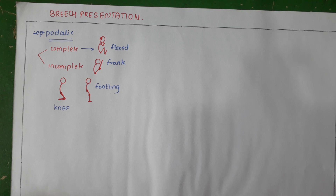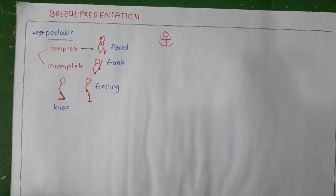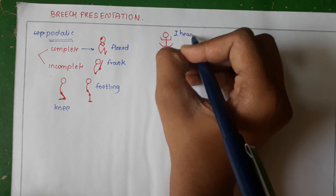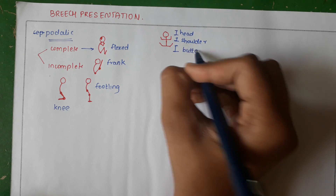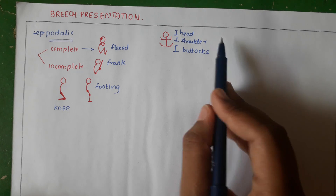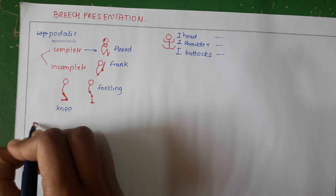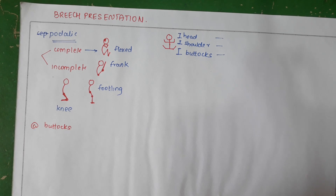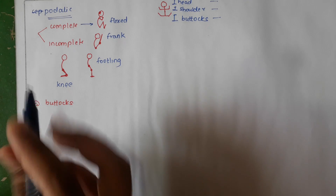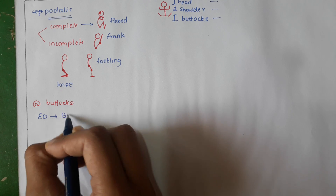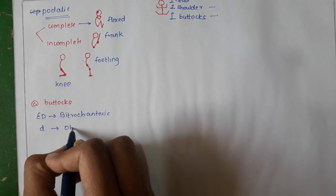For explanation of the mechanism of labour for a Breech presentation, the whole fetus will be divided into three parts: the head, the shoulders, and the buttocks. The mechanism of labour will be explained under these three headings. We will start with the buttocks. The engaging diameter for the buttocks is the bitrochanteric diameter, and this diameter will be engaged in the oblique diameter of the pelvis.